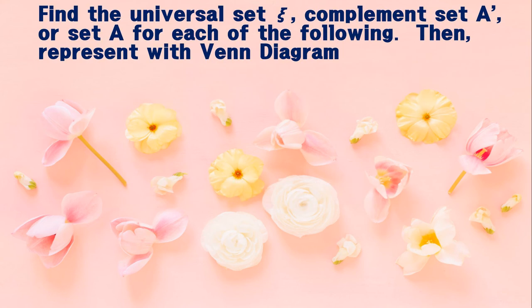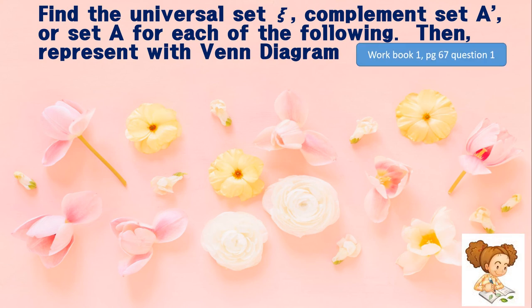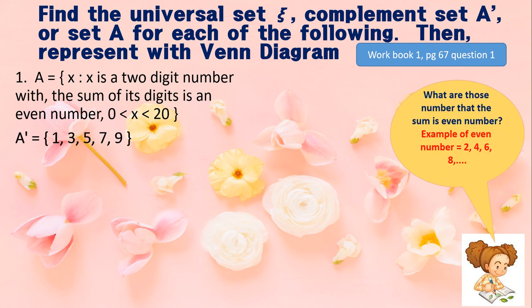The first topic: find the universal set and complement of set A for each of the following, then represent them in a Venn diagram. You can refer to Workbook 1.1, page 67, question number one. Given set A: x is a two-digit number with the sum of its digits being an even number, where x is in the range 0 to 20. The complement of A is {1, 3, 5, 7, 9}.